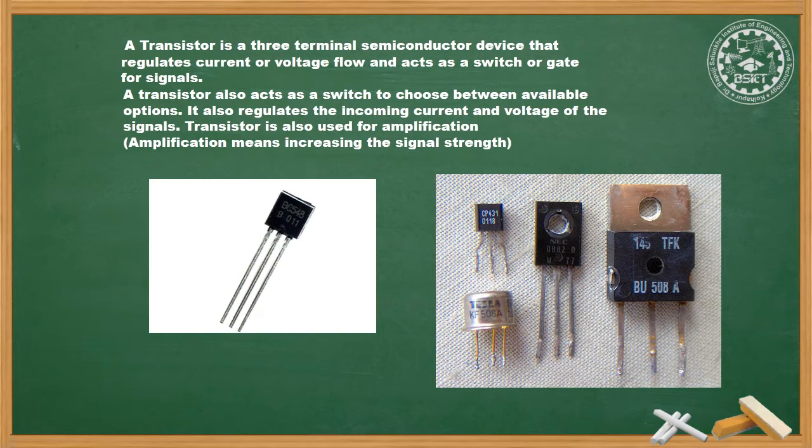A transistor is a three terminal semiconductor device that regulates current or voltage flow and acts as a switch or gate for signals. It is made up of silicon or germanium. The word transistor means transfer of resistor or transfer of varistor, because it shifts the signal from low resistance to high resistance. A transistor also acts as a switch to choose between available options, regulates the incoming current and voltage of signals, and is used for amplification — meaning increasing the signal strength. Transistors are used widely in many electronic components.